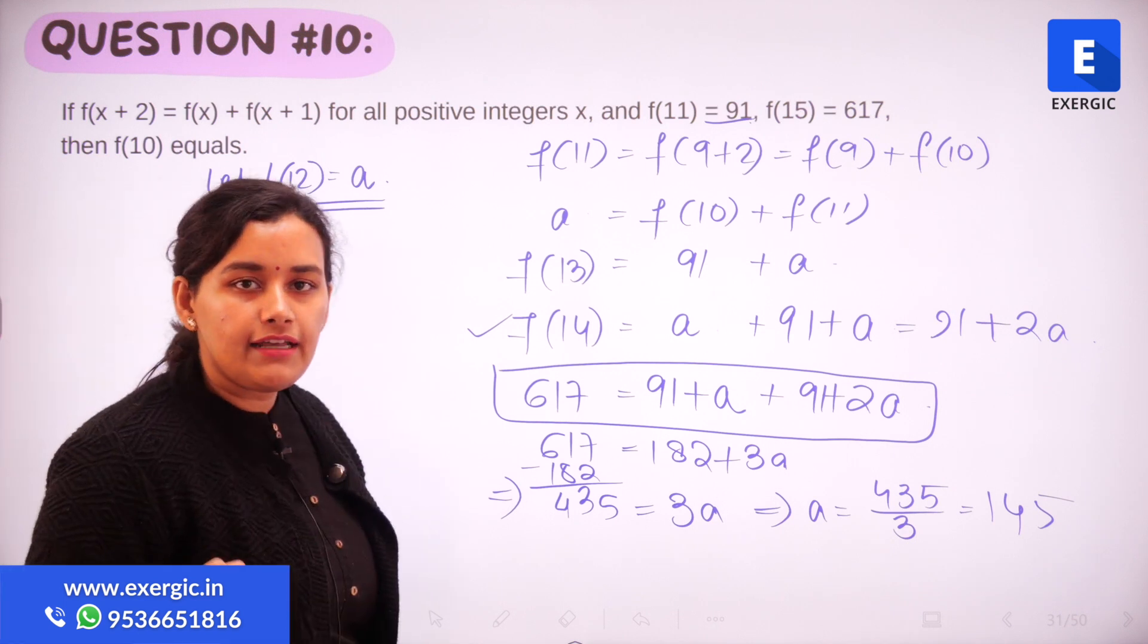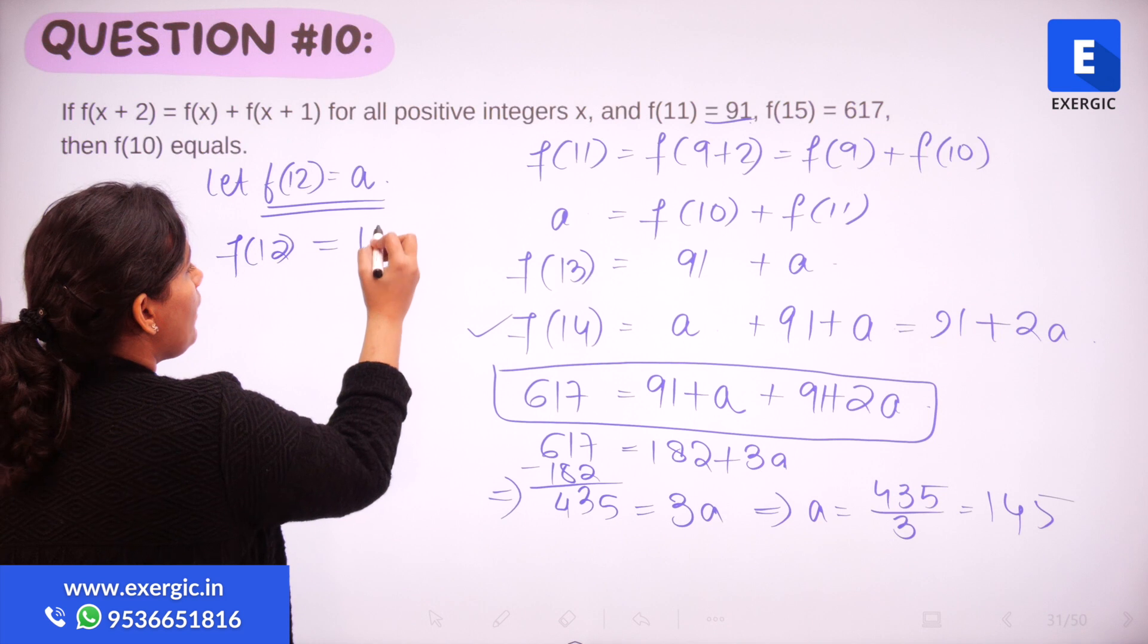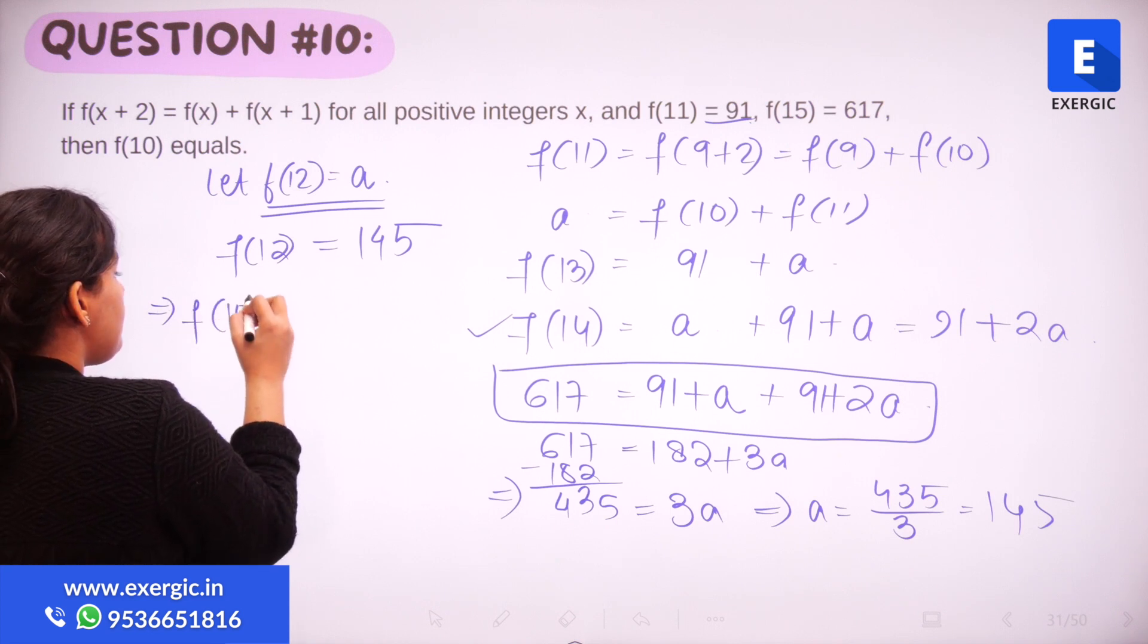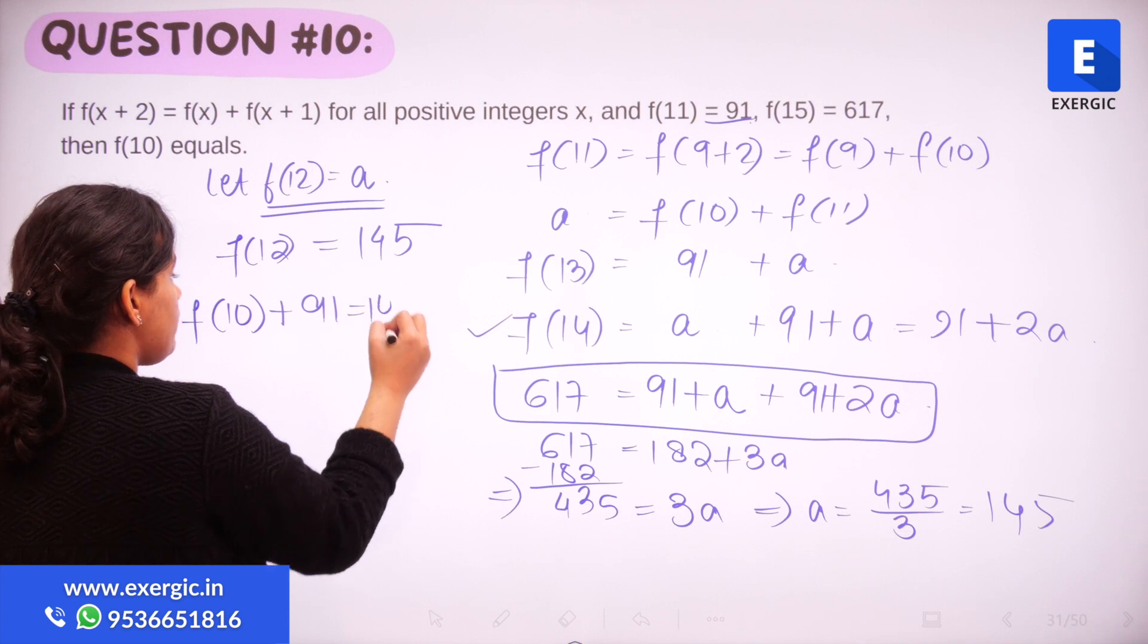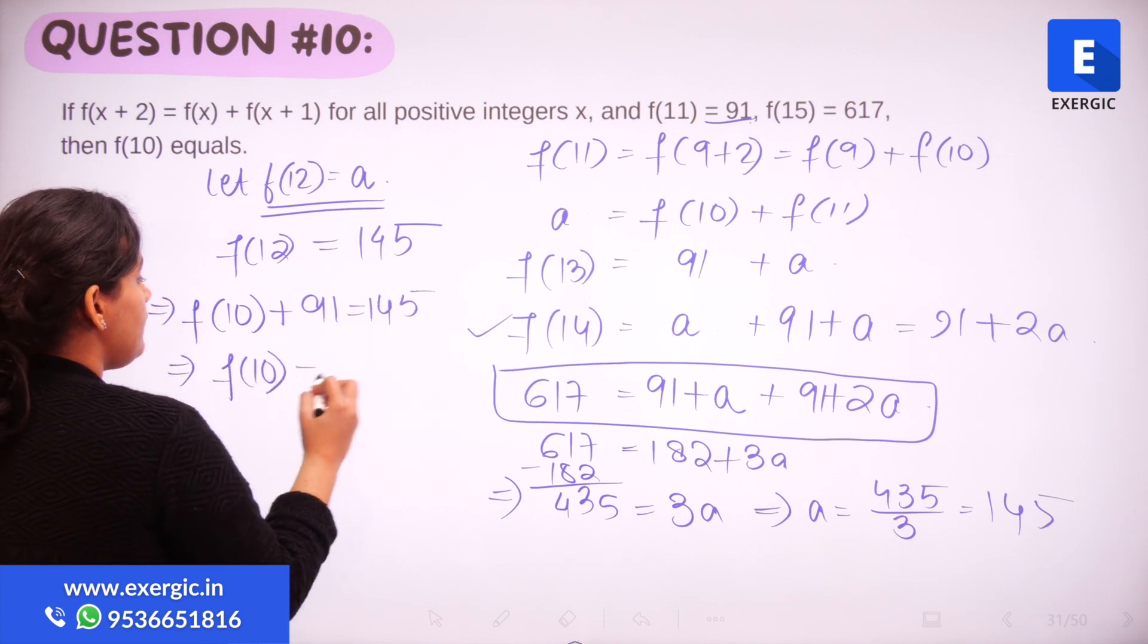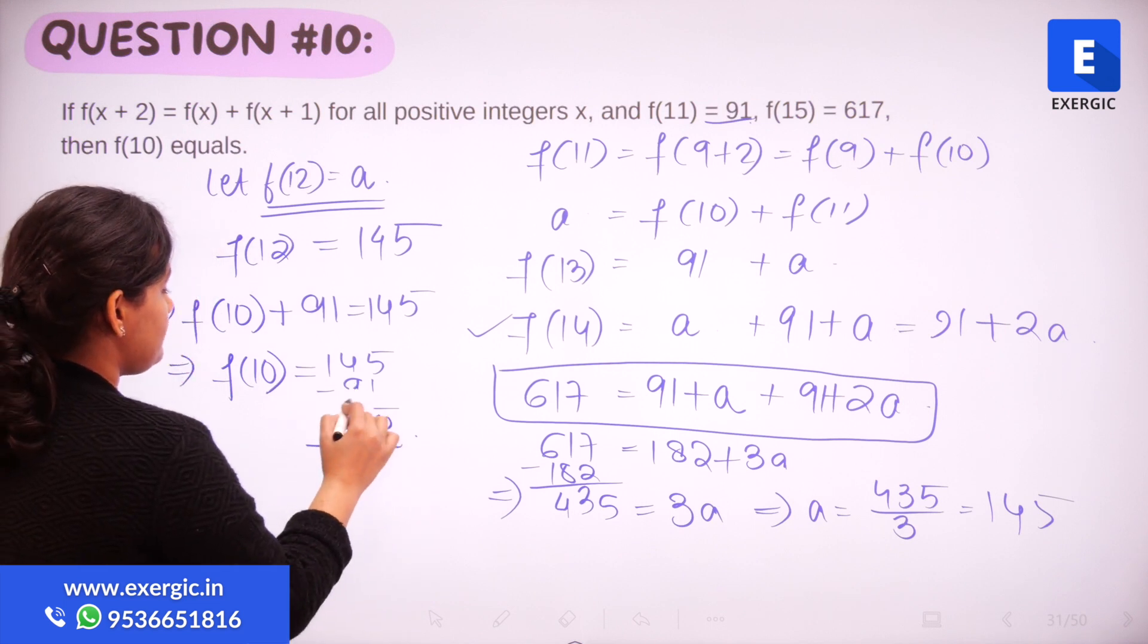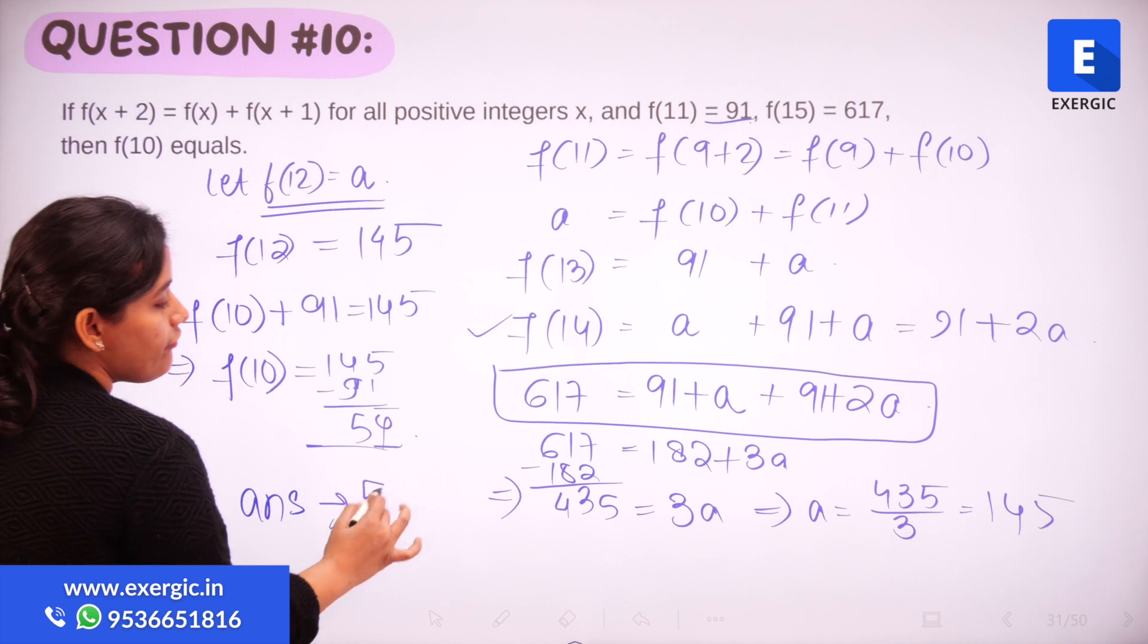What is this a? a is nothing but f(12). So we have f(12) is equal to 145. Now what is this f(12)? f(12) is nothing but f(10) plus f(11). f(11) I know is 91 is equal to 145 and this will give me the value of f(10) that is 145 minus 91 nothing but 54. So the correct answer is going to be 54.